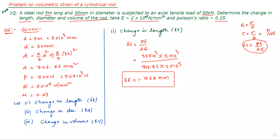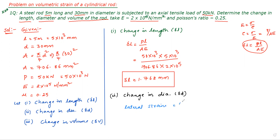Next, calculate the change in diameter δD. When Poisson's ratio is given, we can use: lateral strain = δD / D = μ × longitudinal strain. So δD = μ × (δL / L) × D.